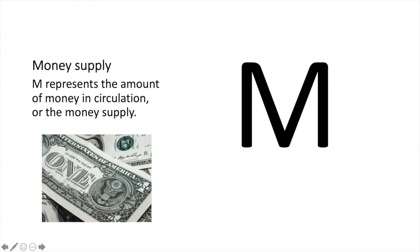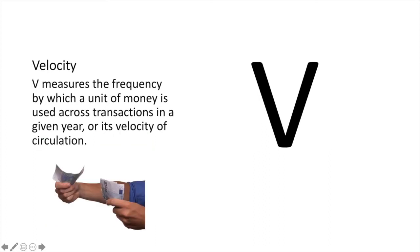M represents the amount of money in circulation, or the money supply. Velocity, or V, measures the frequency by which a unit of money is used across transactions, or its velocity of circulation, in a given time period. For example, if a $10 bill is used in 50 transactions in a given year, then its velocity is said to be 50.